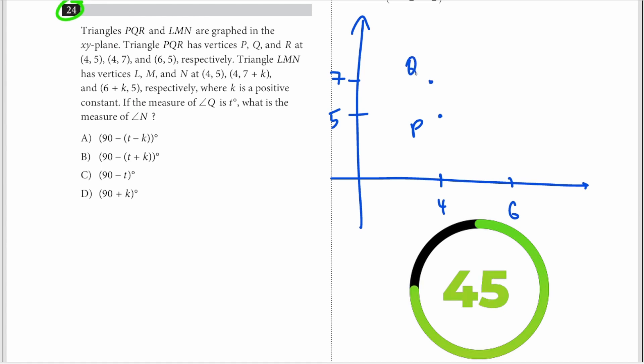So this is P, this is Q, this is R. Now triangle LMN has vertices - these are the vertices - so it's somewhere here, it's somewhere here. So this is M, this is N, and we have another triangle. Now respectively, k is a positive constant. If the measure of angle Q is t, so if this is t...